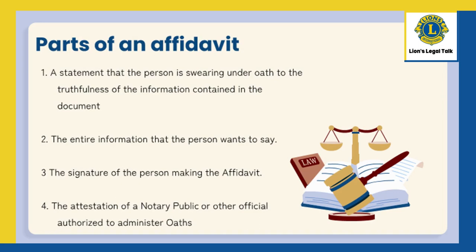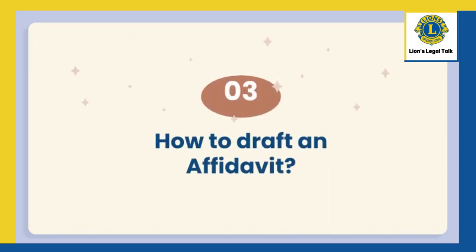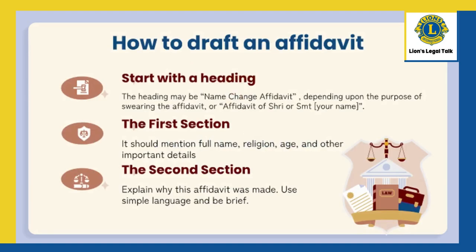How to draft an affidavit: affidavits should be drawn in the first person, and the matter of the affidavit should be divided into paragraphs which are numbered consecutively. Each of the paragraphs in an affidavit should ideally be confined to a portion of the subject. Start with a heading.